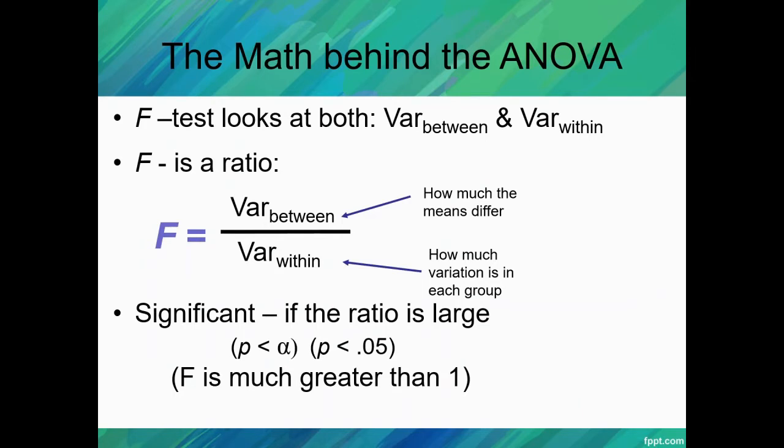So what is the math behind the ANOVA? Well, our F-test is going to look at both the variation between and the variation within, and F itself is a ratio because we're going to take the variation between, which is how much the means differ, and divide that by the variation within, which is how much variation is in each group. If it's significant, the ratio is large, so F is typically going to be much larger than one.